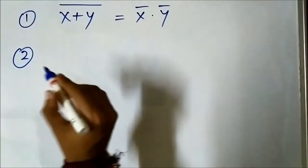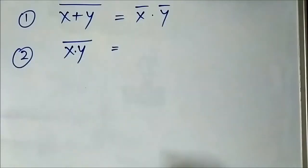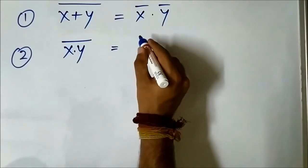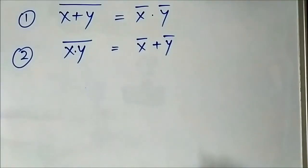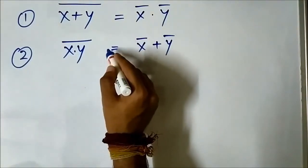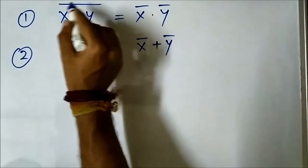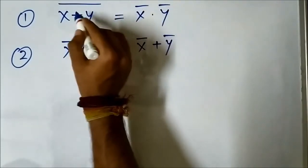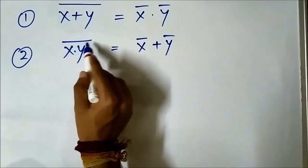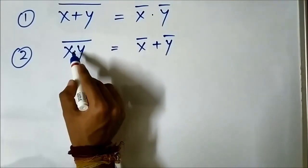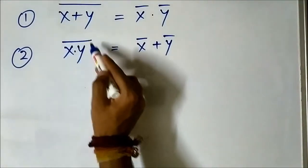The second rule is the whole complement of an AND expression. Here it is AND of x and y. It can be written as the OR of the individual complemented variables: x complement OR y complement. So x AND y whole complement is equal to x complement OR y complement. When we complement the whole OR expression, we get individual complemented variables but the OR changes to AND. When we complement the whole AND expression, we get individual complemented variables but the AND changes to OR. It is simply an interchange between OR and AND, but with the complement portion involved.